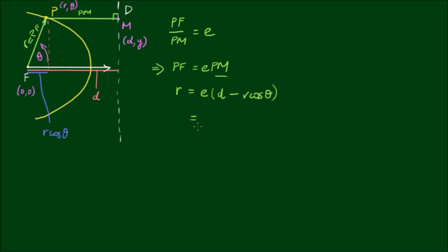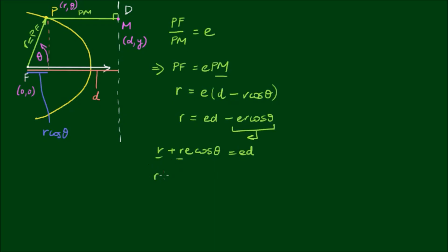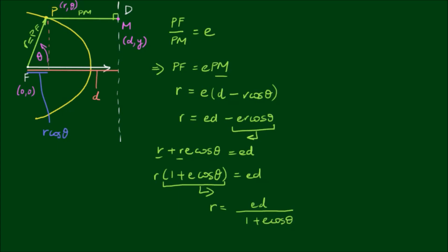So we have R = E(D − Rcosθ). Expanding gives R = ED − ERcosθ. Moving the R term to the left-hand side: R + REcosθ = ED. Factoring out R: R(1 + Ecosθ) = ED. Isolating R gives us R = ED / (1 + Ecosθ). This is the polar form of conic sections.